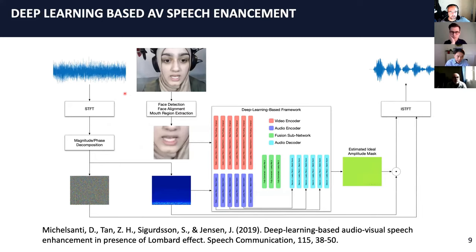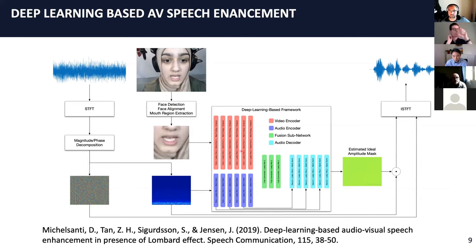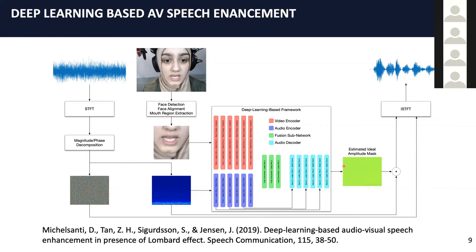For the audio-visual setting, we have a two-tower system. One is the audio stream: we take the audio signal, apply the short-time Fourier transform, and the magnitude is sent into the deep learning model for further processing while the noisy phase is passed on for later. The other stream is vision — we get the face and mouth region and send this into convolutional layers. The audio and visual signals are then combined, and we apply deep convolutional layers to get back to the spectrogram domain. We apply a mask, multiply with the noisy magnitude, and reconstruct the speech signal.